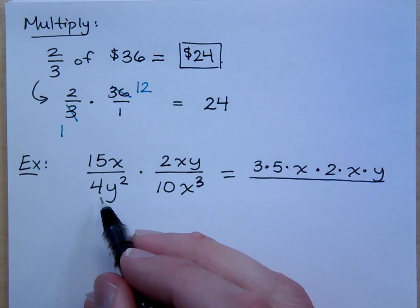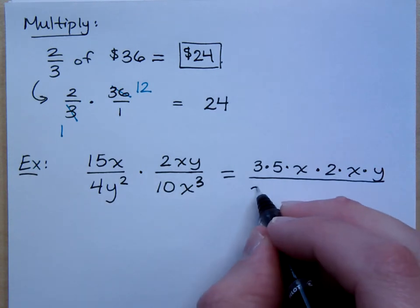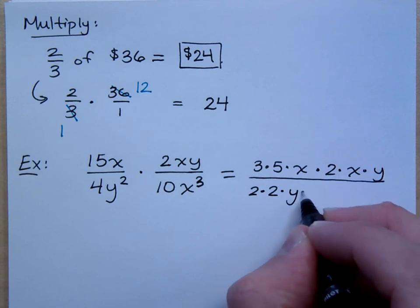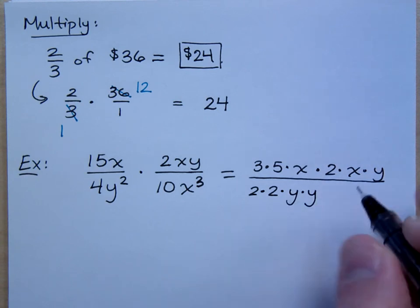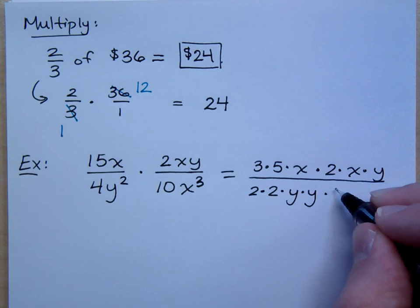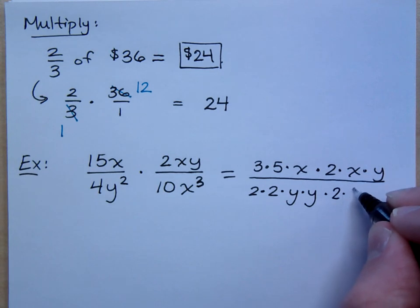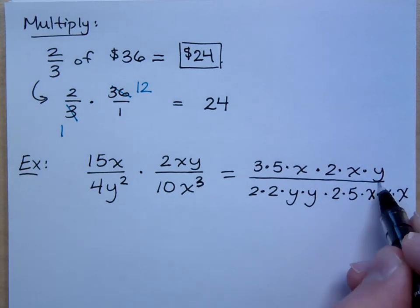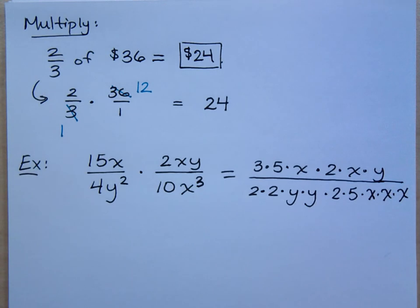How can you break down the 4Y squared? 2 times 2 times Y squared. You've got 2 factors of Y. And then what about the 10? 2 times 5 times the X factors.